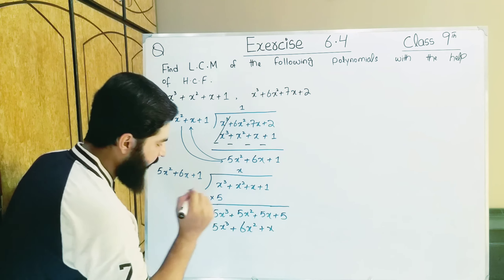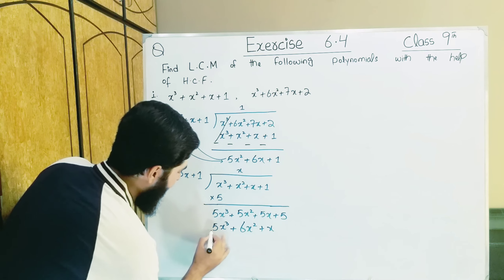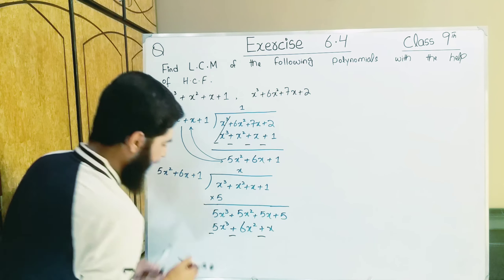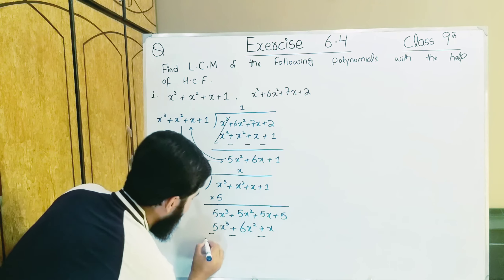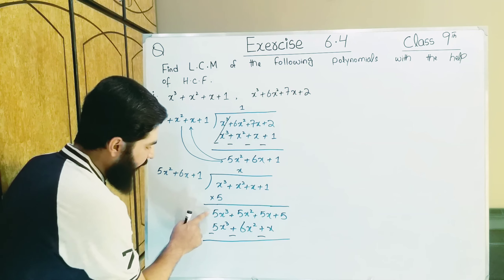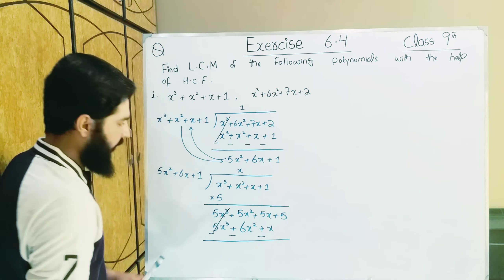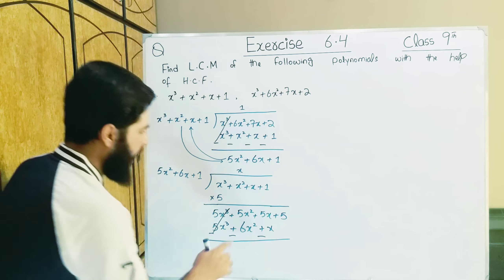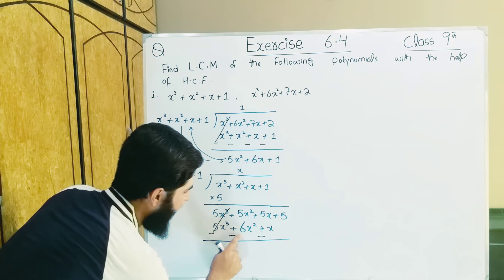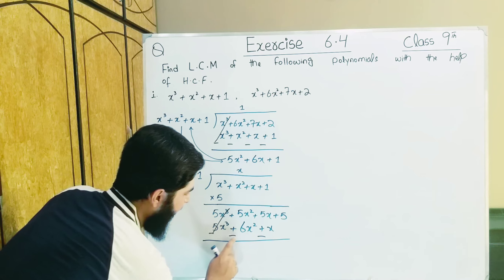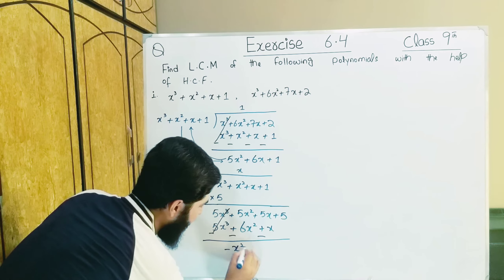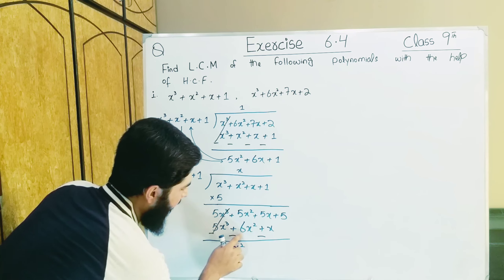Now we change signs: positive becomes negative, positive becomes negative, positive becomes negative. Now we do cancellation. Positive 5x and negative 5x cancel. Then looking at 5x² minus 6x² — since minus 6x² is bigger, 5x² subtracted from 6x² gives minus x².